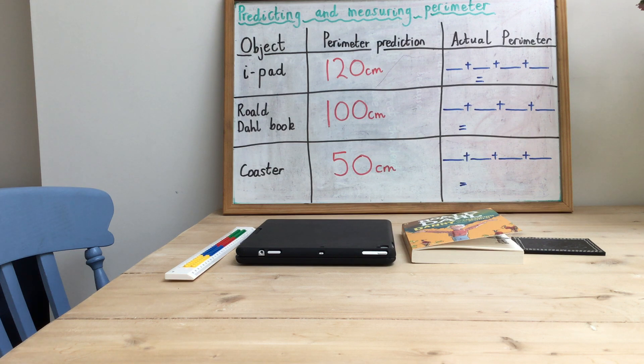If you haven't got a ruler, then whatever you choose to use instead you must use that for all of the objects that you do measure. So if you're going to use pencils, make sure you use pencils for all of them. If you're going to use matchsticks, make sure you use matchsticks for all of them.